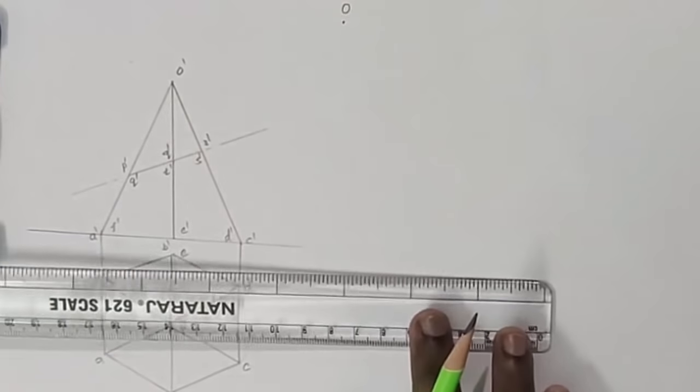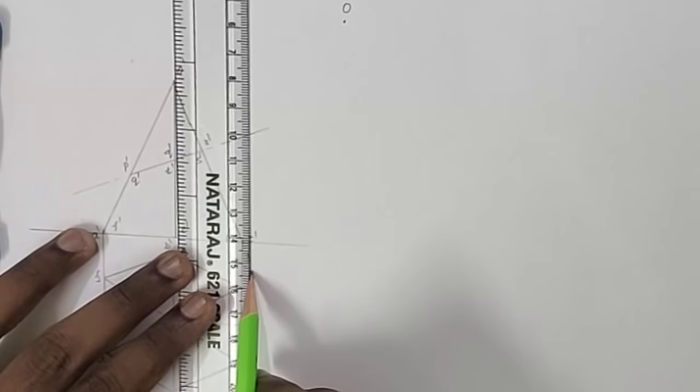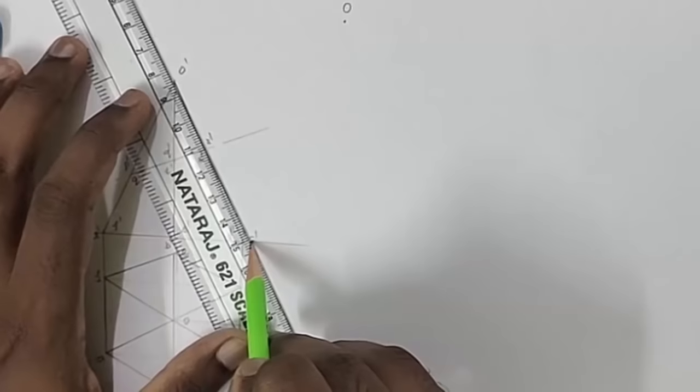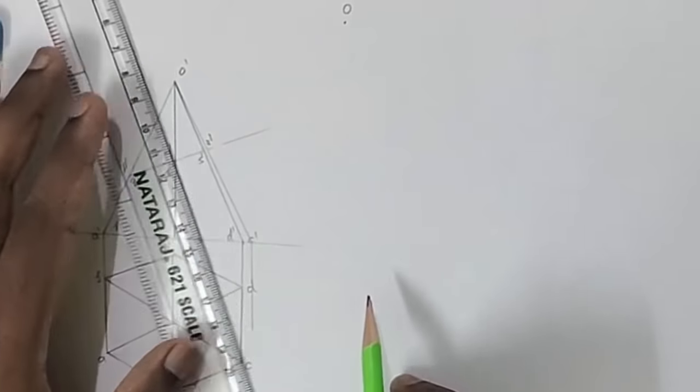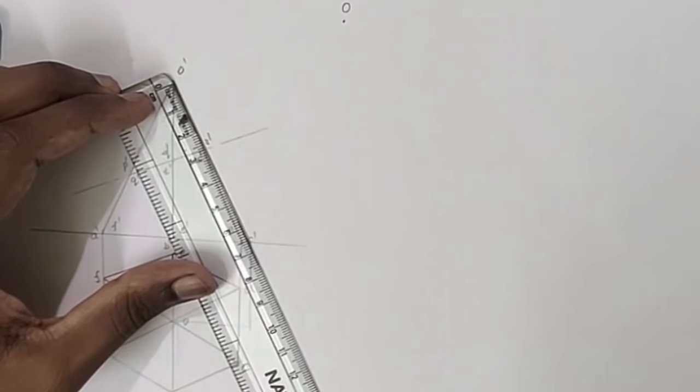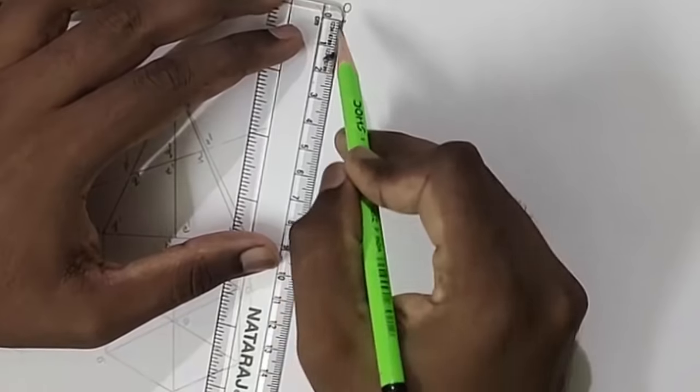From that, mark that line. So this is the true length of the line. Here the true length is 67 mm. So at any point I have to mark 67 mm at any angle. I have marked 67 mm.